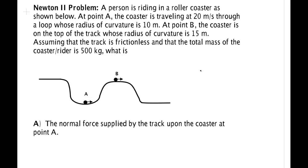Let's write that down. V sub A, 20 meters per second. A loop whose radius of curvature is 10 meters. R sub A, 10 meters. At point B, the coaster is on top of the track whose radius of curvature is 15 meters. R B, 15 meters. Assume the track is frictionless and that the total mass of the coaster rider is 500 kilograms.